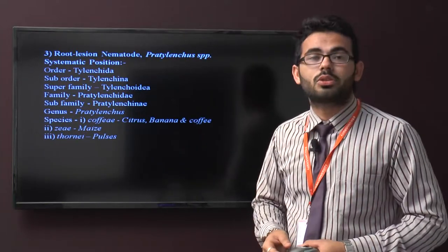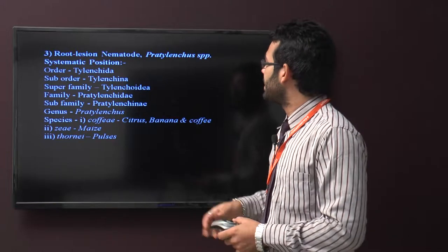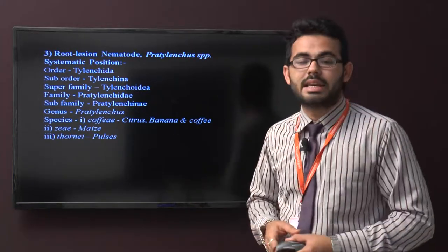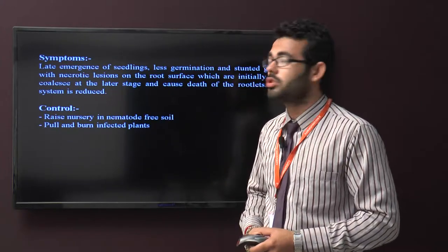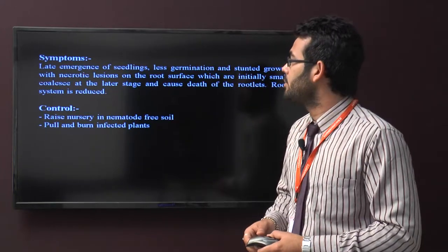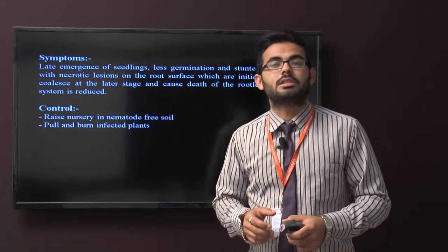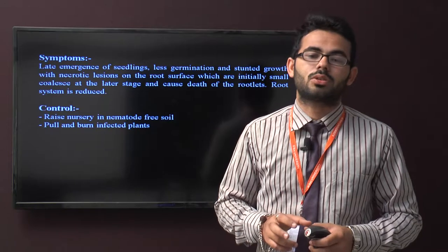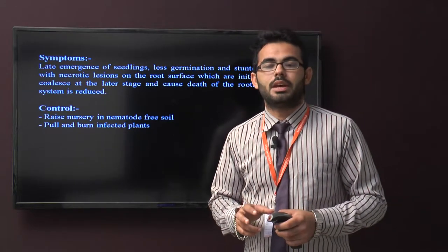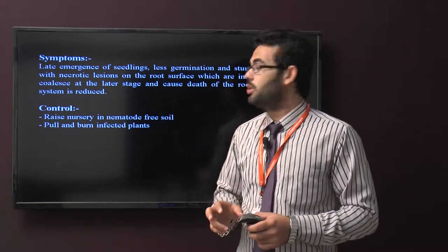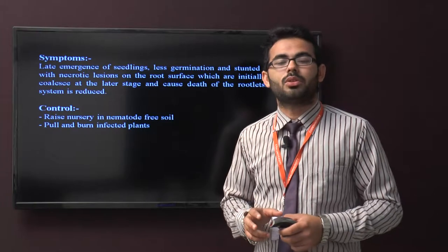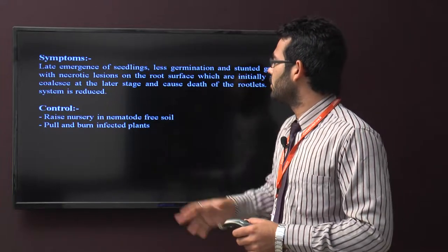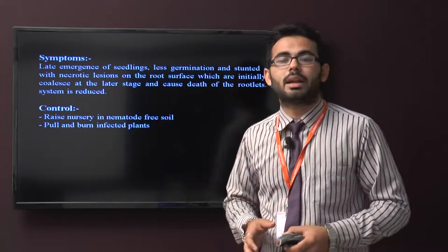Third is root lesion nematode, Pratylenchus species. Different species include coffeae, goodeyi, and thornei. Symptoms include late emergence of seedlings, less germination, stunted growth with necrotic lesions on root surface, and reduced root system. Control includes using nematode-free nursery and pulling and burning infected plants.